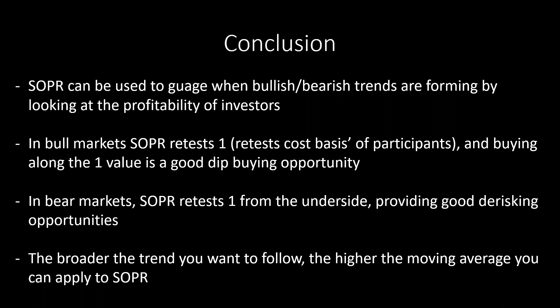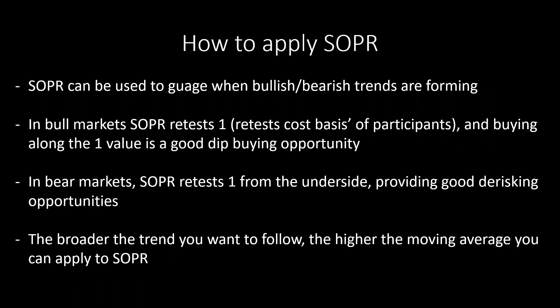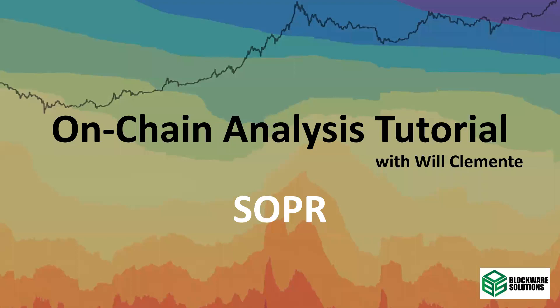So to wrap this up: SOPR can be used to gauge when bullish or bearish trends are forming by looking at the profitability of investors. In bull markets, SOPR retests one — the cost basis of market participants — and buying along the one value is a good dip buying opportunity. In bear markets, SOPR retests one from the underside, providing good de-risking opportunities. The broader the trend you want to follow, the higher the moving average you can apply. I hope you got something out of this — let me know any feedback and other metrics you'd like to see covered. Have a great day and I'll see you out there on Twitter.